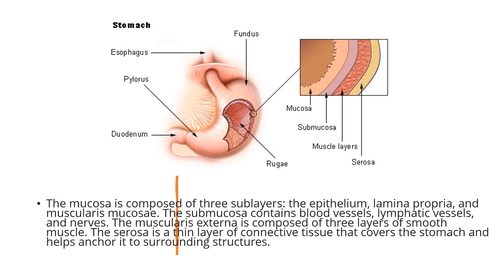The submucosa is a layer of connective tissue that contains blood vessels, lymphatic vessels, and nerves. The muscularis externa is composed of three layers of smooth muscle that contract to mix and propel the food through the stomach. The outermost layer of the stomach is the serosa, a thin layer of connective tissue that covers the stomach.